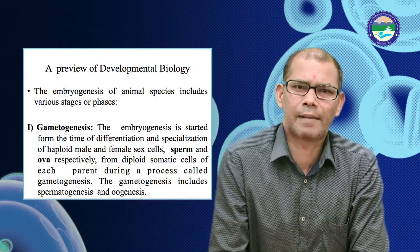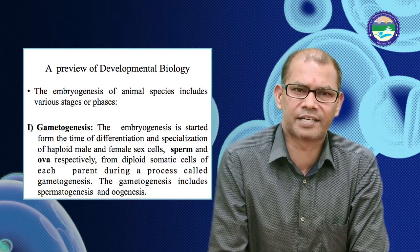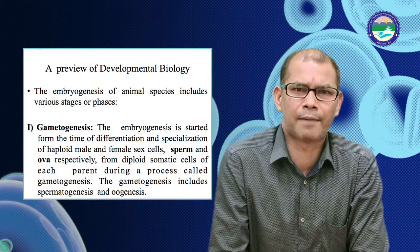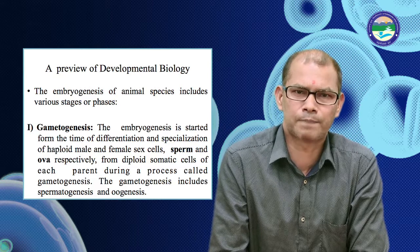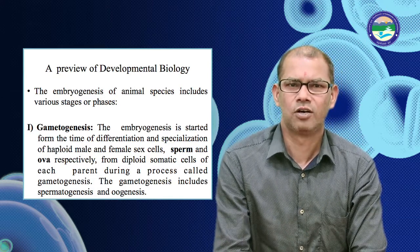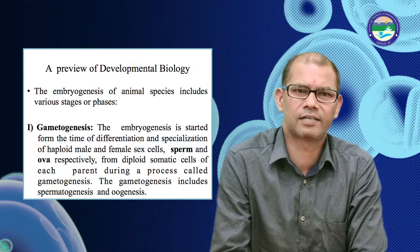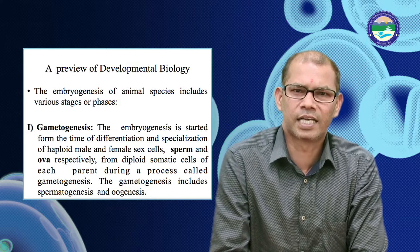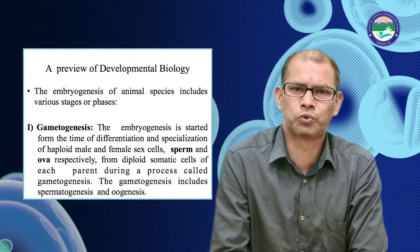First phase: Gametogenesis. Embryogenesis is started from the time of differentiation and specialization of the male and female sex cells — sperm and ova respectively — from diploid somatic cells of each parent, during a process called Gametogenesis. Gametogenesis includes spermatogenesis and oogenesis.